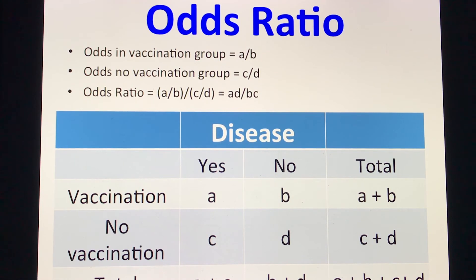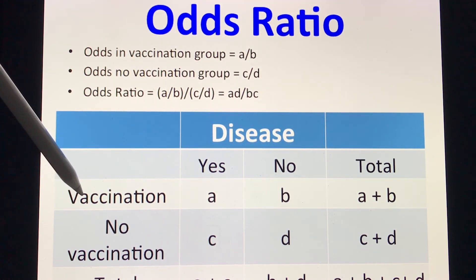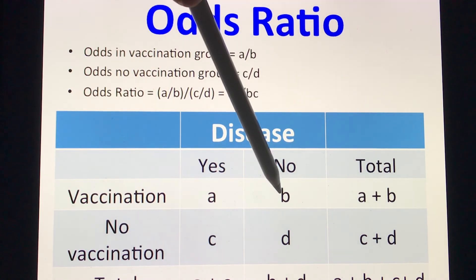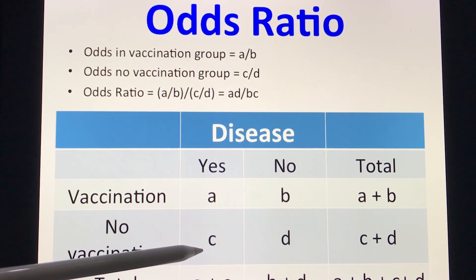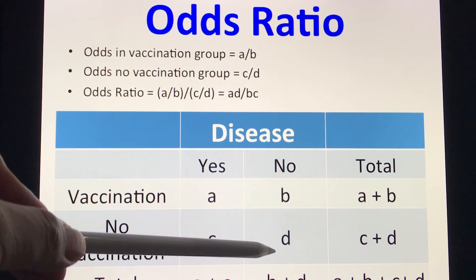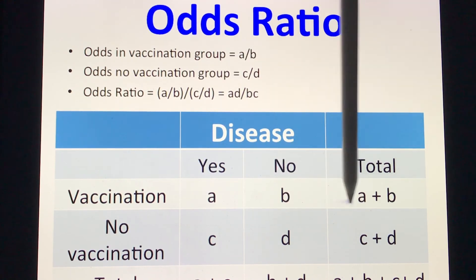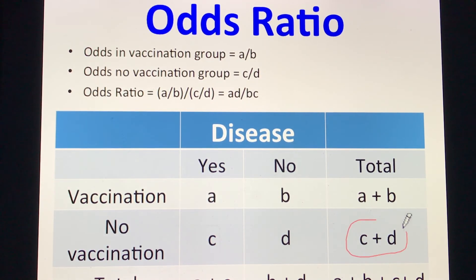Here's another example. The outcome is disease — present (yes) or absent (no) — and the exposure variable is vaccination. Those who had the disease and were vaccinated is letter A. Those with no disease who were vaccinated is letter B. Those with the disease and no vaccination is letter C. Those with no disease and no vaccination is letter D. The totals are A plus B for vaccinated and C plus D for unvaccinated. That gives you your odds ratio.